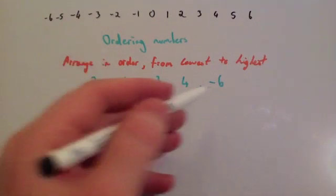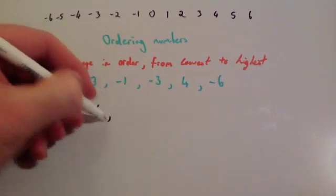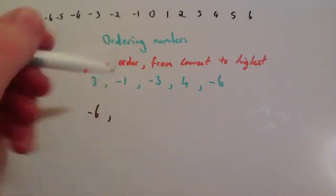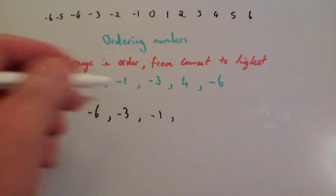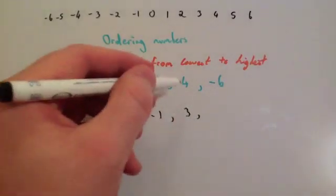So let's just arrange them in order. So the lowest one would be minus 6 or negative 6 and the next lowest would be minus 3 and then minus 1 and then 3 and then 4.